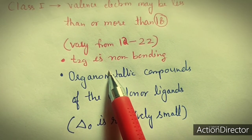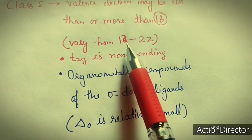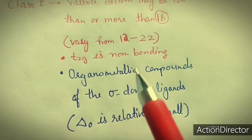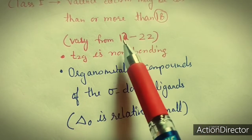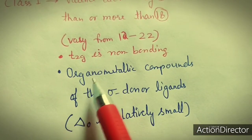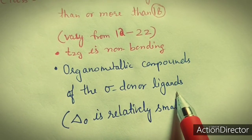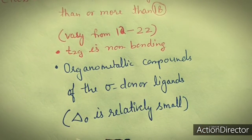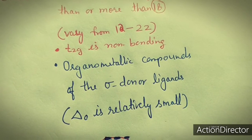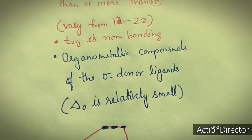Class 1 compounds do not obey the 18 electron rule because the total number of electrons are less than or greater than 18. These are organometallic compounds of sigma donor ligands where delta O is relatively small.